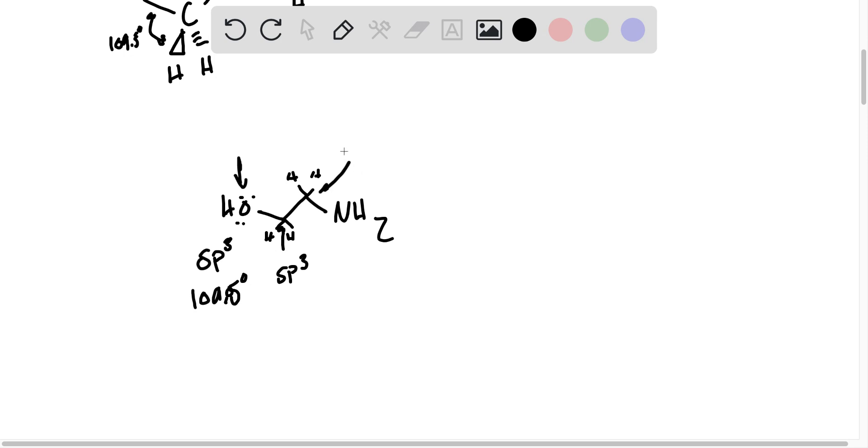This carbon, same deal, sp3. And just like the oxygen, that means 109.5, 109.5. And this NH2 also has a lone pair, that's three bonds and a lone pair, four electron regions. Everything in this molecule is sp3 hybridized, and all of it will have 109.5 degree bond angles.